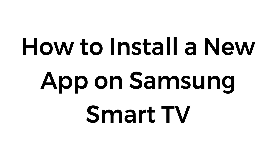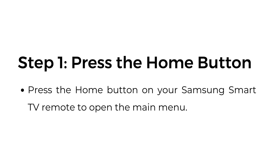How to install a new app on Samsung Smart TV. Step number one: press the home button. Press the home button on your Samsung Smart TV remote to open the main menu.